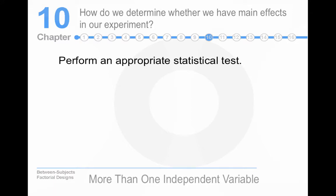How do we determine whether we have main effects? We perform an appropriate statistical test. Probably an ANOVA, which is analysis of variance, or MANOVA, which is a multivariate analysis of variance. It depends on whether we have one dependent variable, which would be an ANOVA, or multiple dependent variables, which would be a MANOVA.